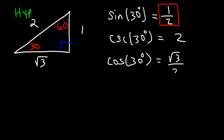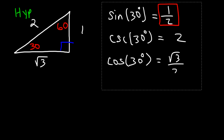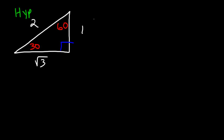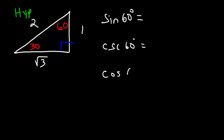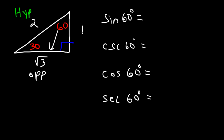Now let's find the values associated with the 60 degree angle. We'll find sine of 60, cosecant 60, cosine 60, secant of 60, and tangent and cotangent of 60. With respect to 60, the opposite side is going to be the square root of 3 divided by the hypotenuse, which is 2. So sine of 60 is root 3 over 2.